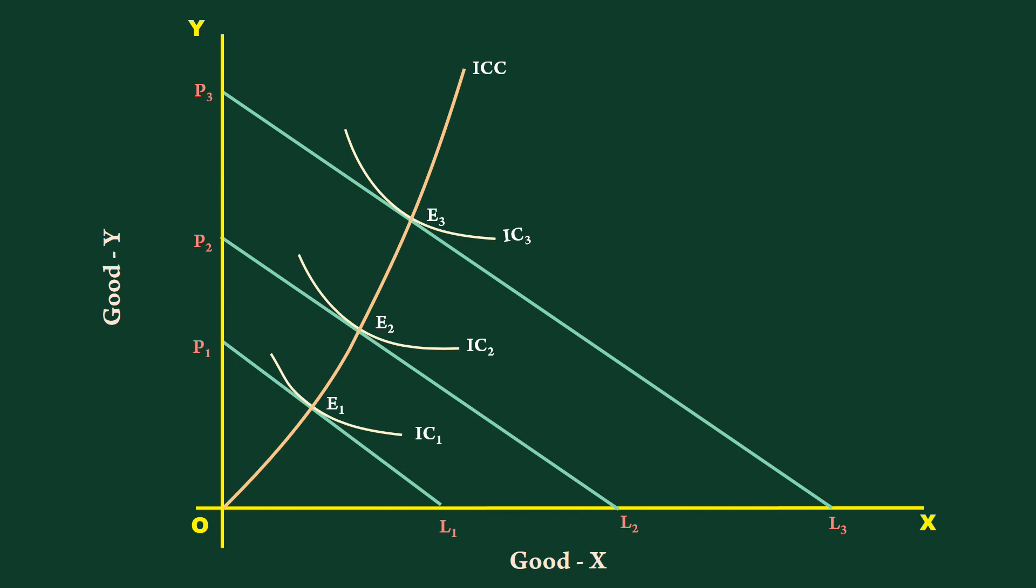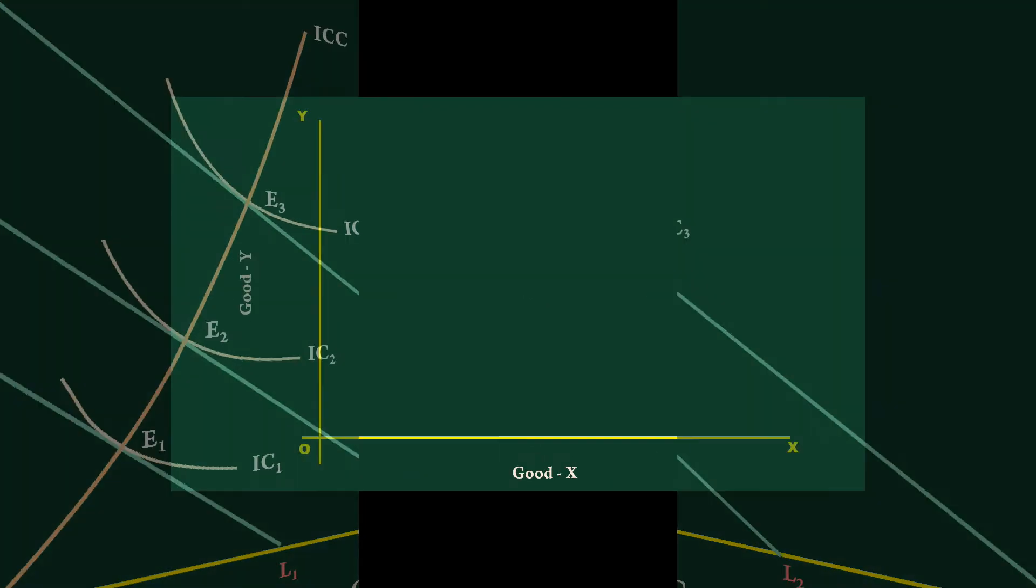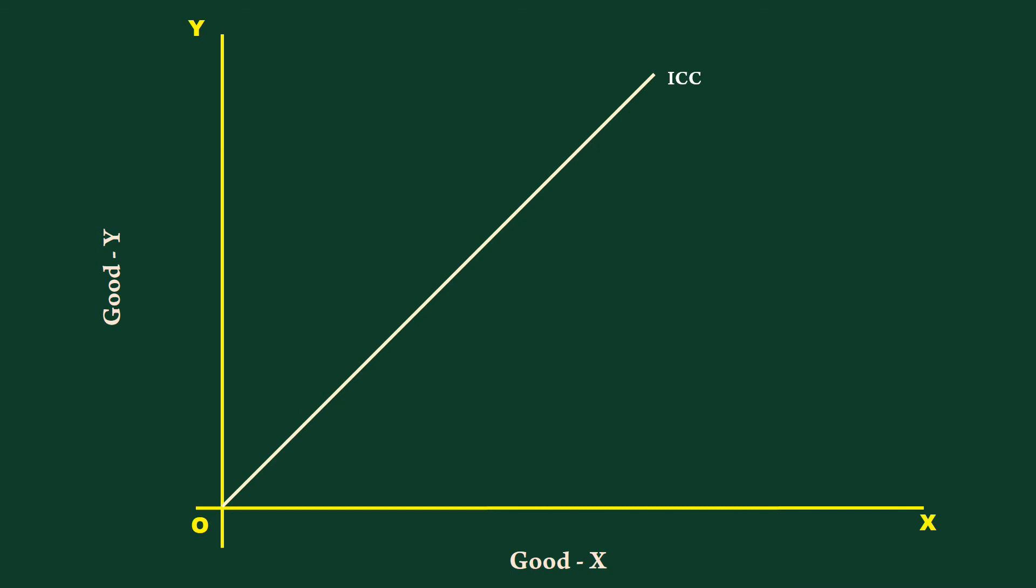Suppose the income consumption curve is a 45 degree upward sloping curve. Both good X and good Y are normal.